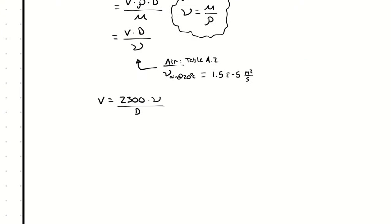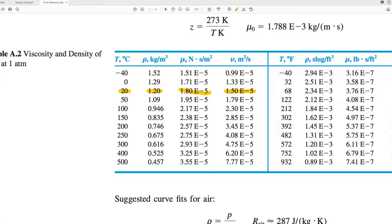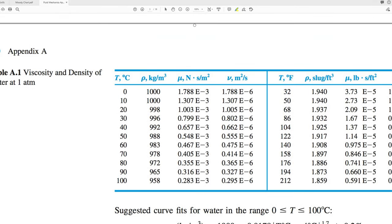For water properties, we're going to use table A1. We still have a temperature of 20 degrees. And again, we can look up the density and the dynamic viscosity and plug them both in. Or for convenience, we can use a single parameter, the kinematic viscosity, and plug in a single number.